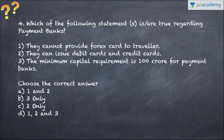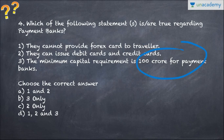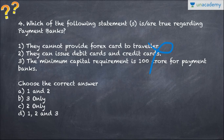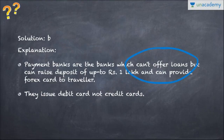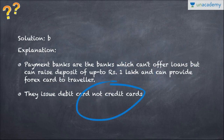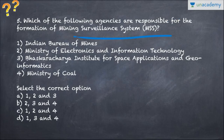Question four: Which of the following statements is true regarding payment banks? They cannot provide forex cards to travelers — this is incorrect, they can. They can issue debit cards but not credit cards, as credit cards would be too risky. The minimum capital requirement is 100 crore. Payment banks cannot offer loans but can raise deposits of up to rupees 1 lakh. Answer is B — third statement only.